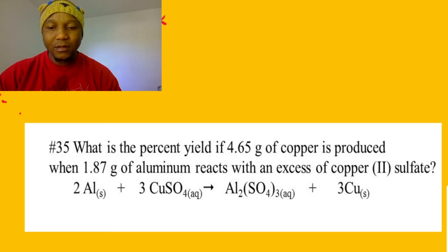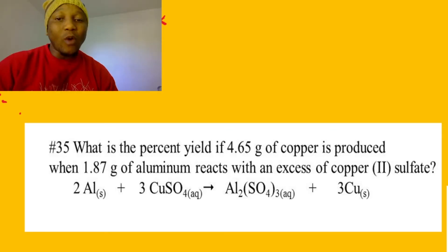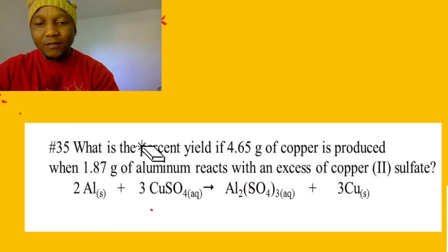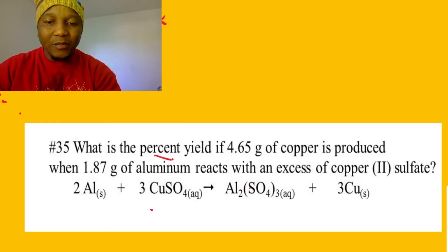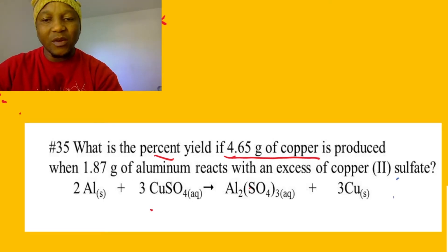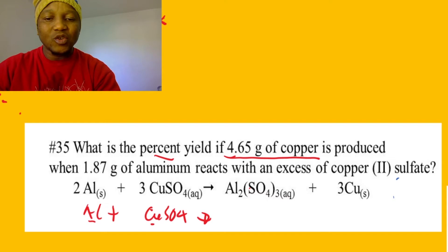What is the percent yield of copper? So they were doing an experiment. We had aluminum and it reacted with copper sulfate. This is going to be a replacement reaction — it means the aluminum is going to come and replace the copper.